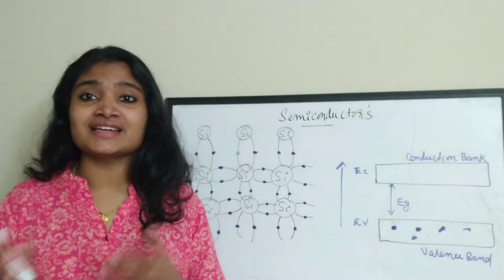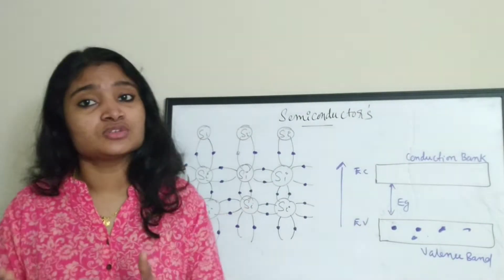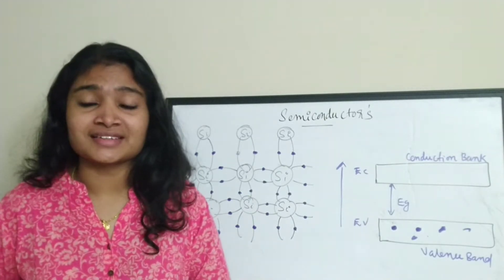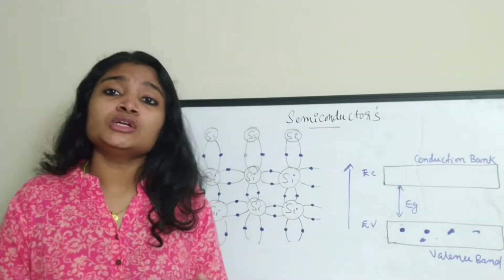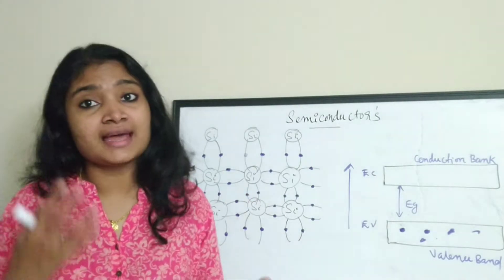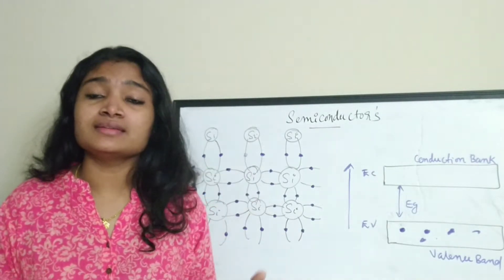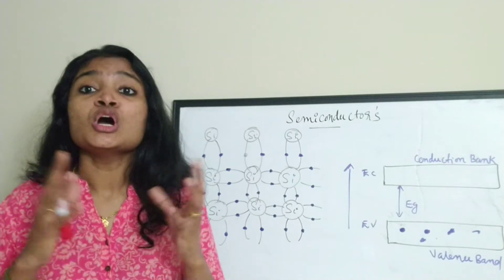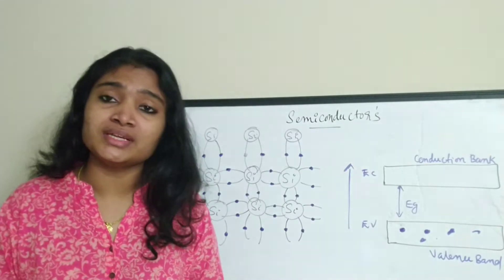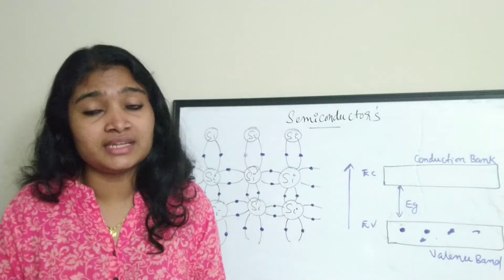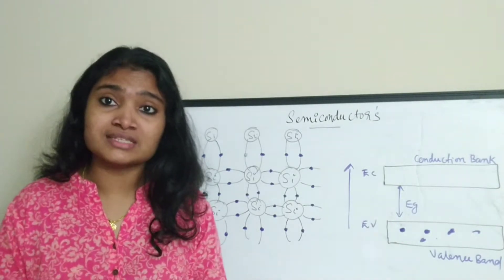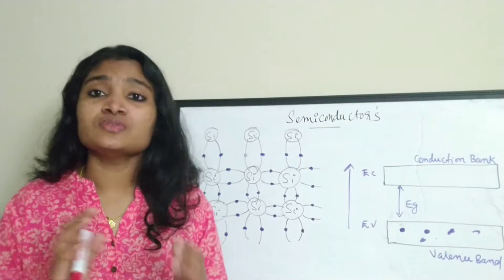The activity of semiconductors lies in between that of conductors and insulators. The mainly used semiconductors are silicon, germanium, etc. There are two types of semiconductors: intrinsic semiconductors, which are semiconductors in their most pure form, and extrinsic semiconductors, where we add some impurities to change the conductivity. The process of adding impurities is called doping.